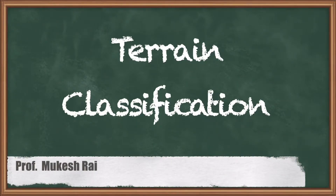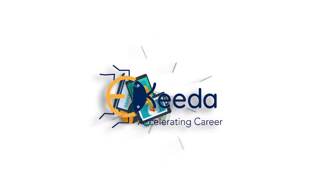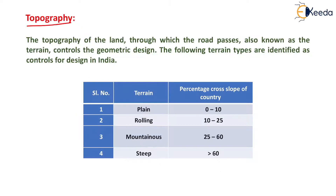Hello students, today we are going to study terrain classification. The topography of the land through which the road passes, also known as terrain, controls the geometric design. This means the terrain classification generally controls the radius of the horizontal curve, the vertical curve, the gradient, and the cross slope.